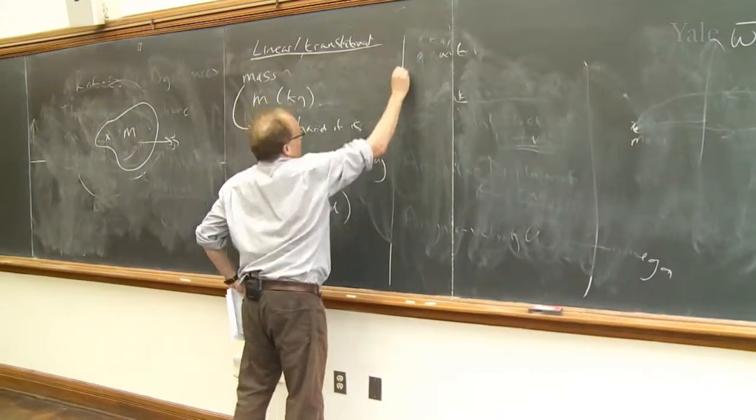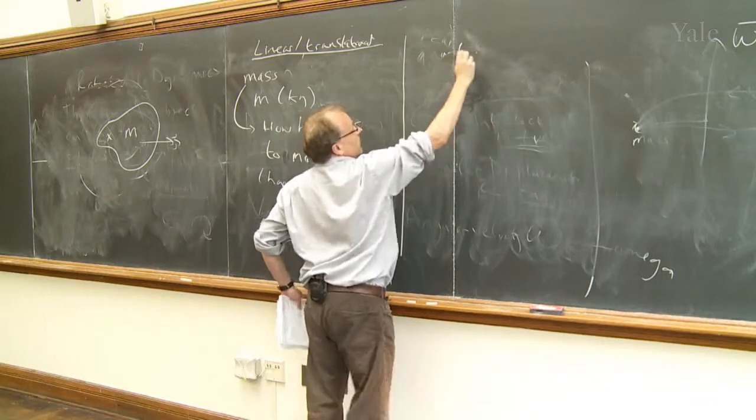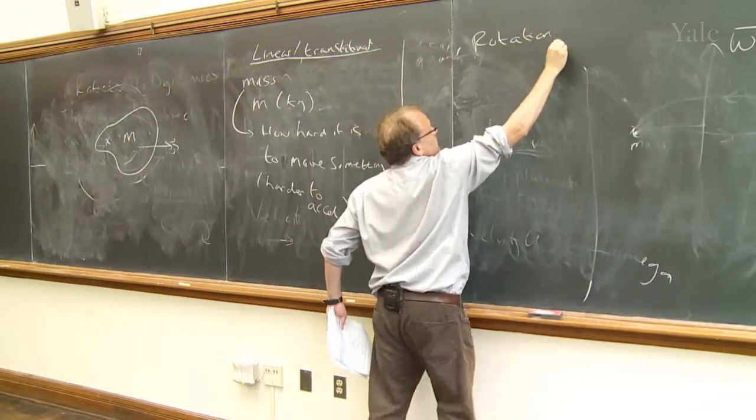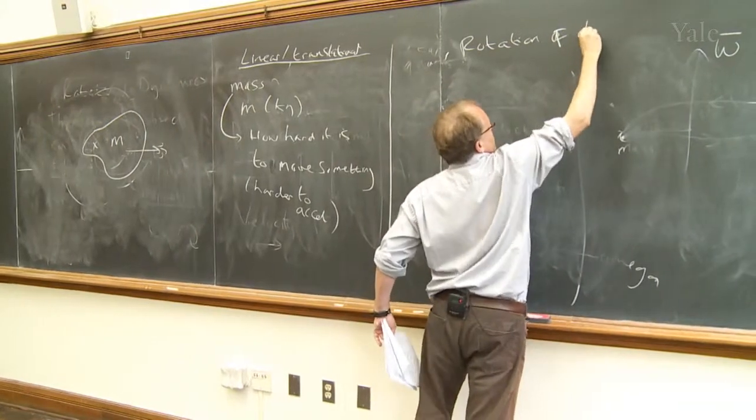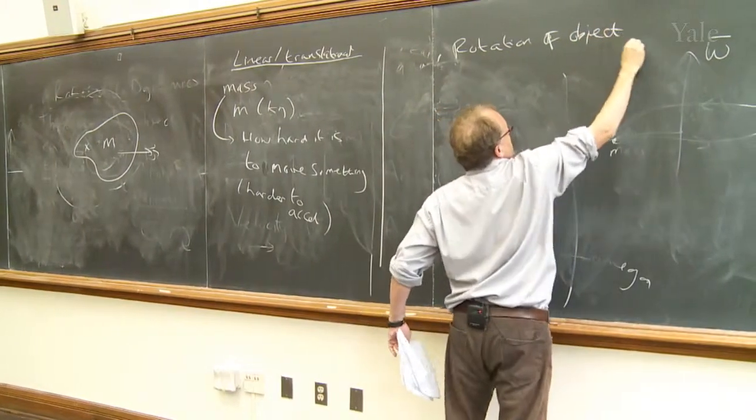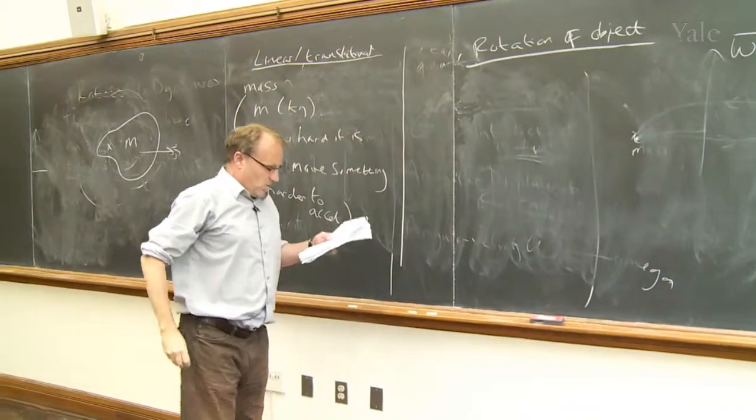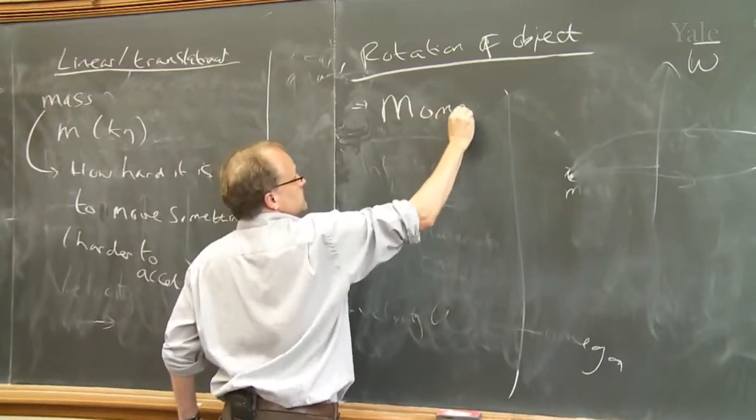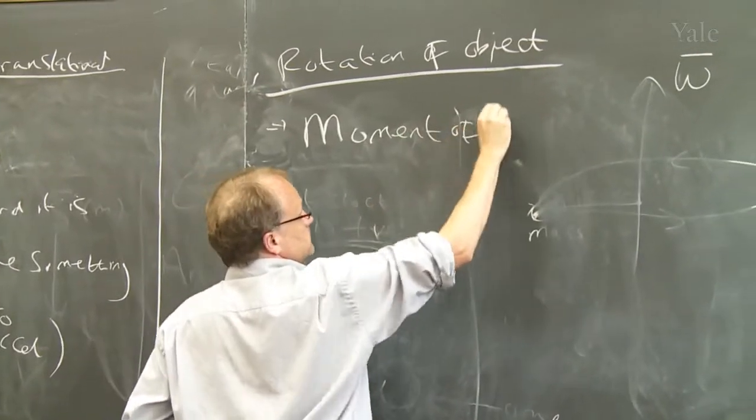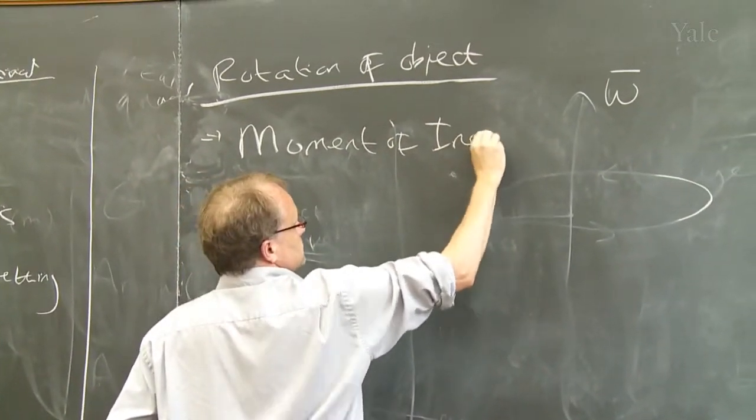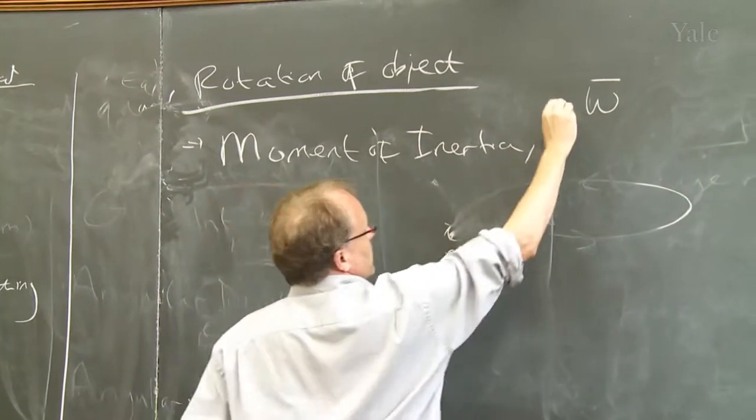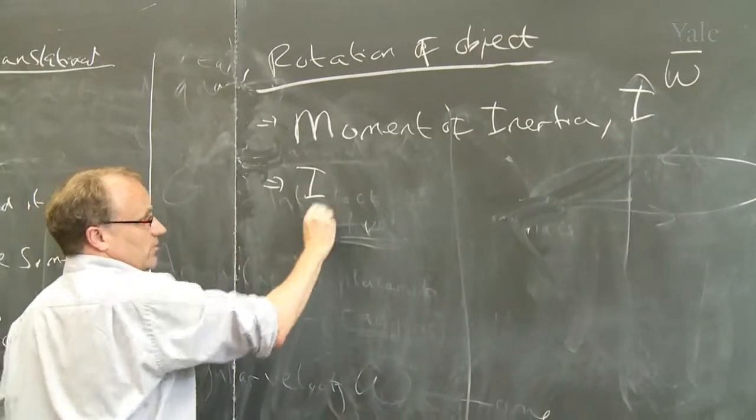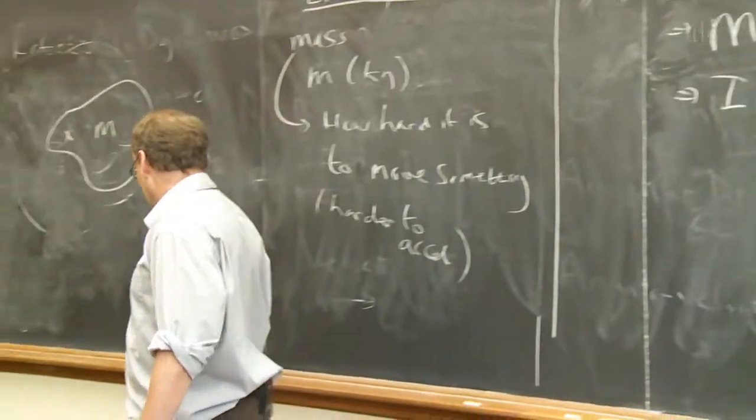So if we think about the rotation of that object, rotation of the object, then we have this quantity called moment of inertia. We use the symbol I, and this tells us how difficult it is to rotate something.